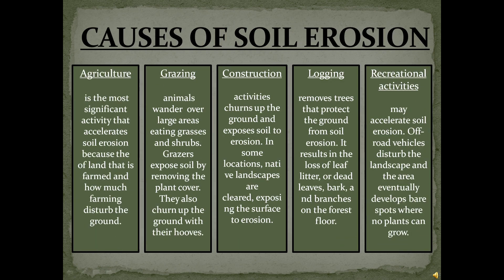Causes of Soil Erosion. First, agriculture is the most significant activity that accelerates soil erosion, because of the amount of land that is farmed and how much farming disturbs the ground. Second, grazing: animals wander over large areas eating grasses and shrubs. Grazers expose soil by removing the plant cover and also churn up the ground with their hooves.